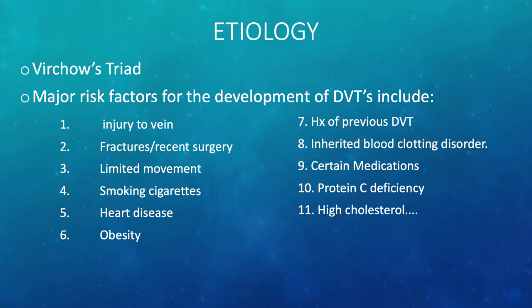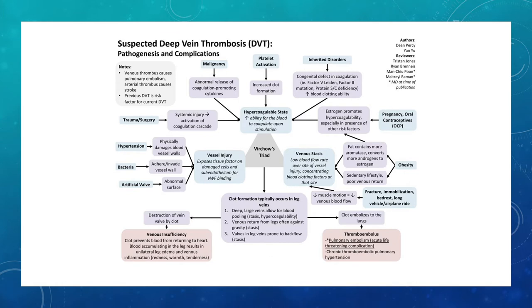Risk factors also include inherited blood clotting disorders, certain medications such as estrogens or birth control, protein C deficiencies, and high cholesterol. The Virchow's Triad diagram illustrates vessel injury, a hypercoagulable state leading to increased clot formation — which can result from inherited disorders such as protein S or protein C deficiency — and venous stasis limiting motility, all resulting in clot formation in the legs.